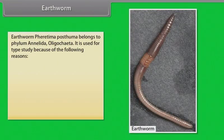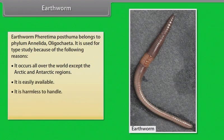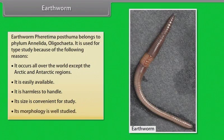Earthworm — Pheretima posthuma — belongs to phylum Annelida, Oligochaeta. It is used for type study because it occurs all over the world except the arctic and antarctic regions, is easily available, is harmless to handle, its size is convenient for study, and its morphology is well studied.